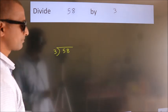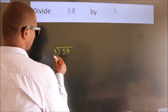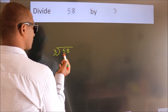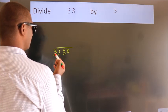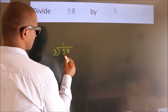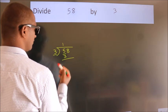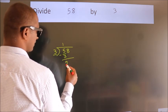Next. Here we have 5, here 3. A number close to 5 in the 3 table is 3 once 3. Now, we should subtract. We get 2.